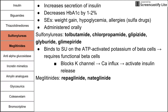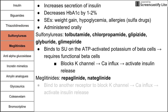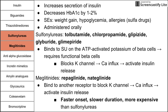The meglitinides have a similar mechanism of action. These are repaglinide and nateglinide — they end in 'glinide.' They bind to a different receptor on the same potassium channel, but after that the mechanism is the same: blocking the potassium channel leads to calcium influx and activates insulin release. The meglitinides have faster onset but shorter duration compared to the sulfonylureas, and they are also more expensive.